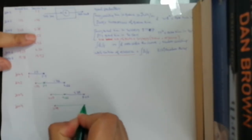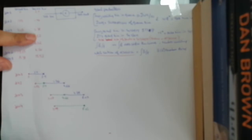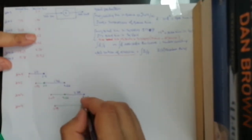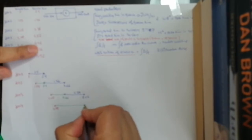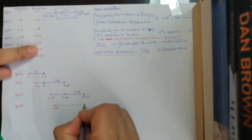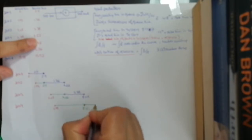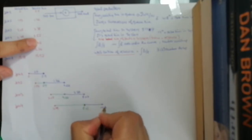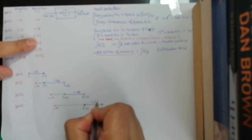Job 4 arrives at 3.79. It waits in the system until job 3 leaves at 8.05, then gets serviced for 4.52 time units, leaving at 12.57.